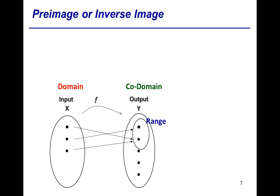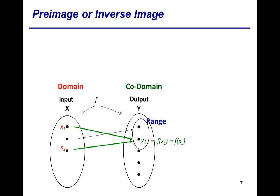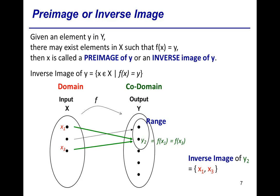If we are given a particular element in the codomain, say y2, and we look at things from the point of view of y2, then by following the first arrow in the reverse direction we find x1, such that f of x1 equals y2. And by following the second arrow in reverse, we find x3, such that f of x3 equals y2. We say the inverse image of y2 is the set of x1 and x3. In general, given an element y in codomain Y, if there exist elements x in domain X such that f of x equals y, then x is called a pre-image or inverse image of y.